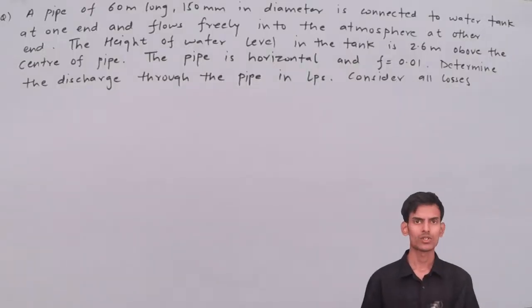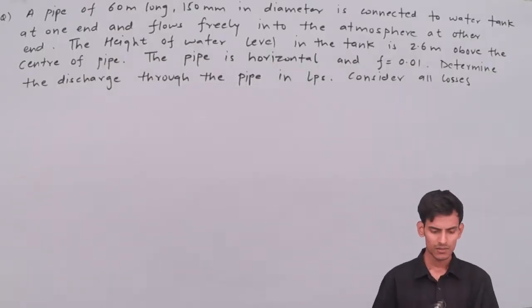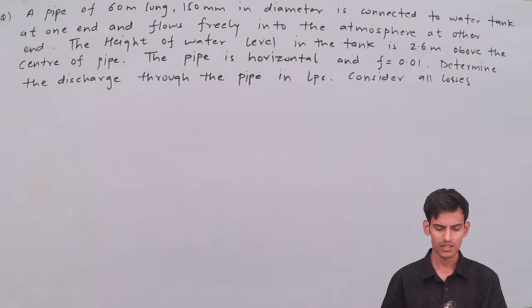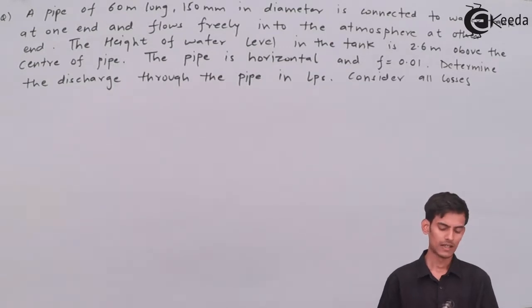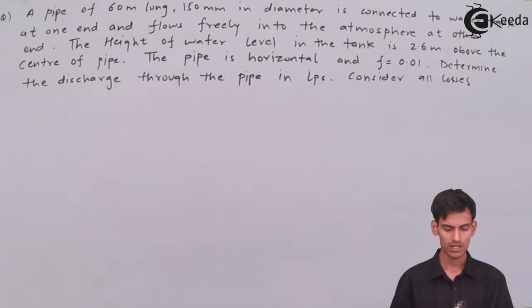Let me read you the question. A pipe of 16 meters long, 150 mm in diameter, is used to connect a water tank at one end and flows freely into the atmosphere at the other end. The height of the water level in the tank is 2.6 meters above the center of the pipe. The pipe is horizontal and the friction factor is 0.01. Determine the discharge through the pipe in liters per second. Consider all losses.